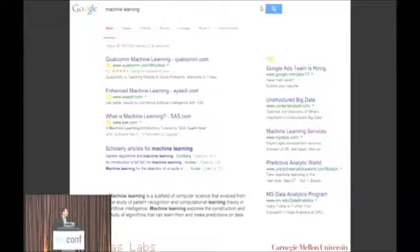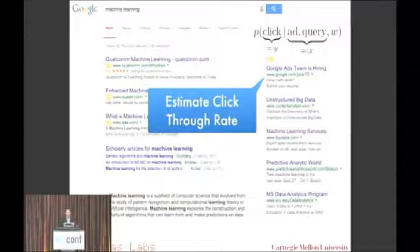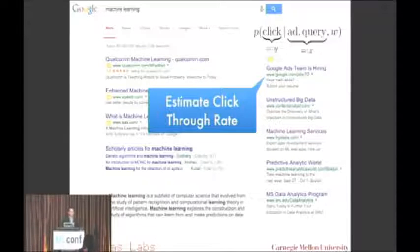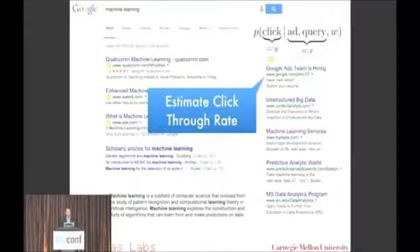Let's start with something really simple — logistic regression. If I do a Google search for machine learning, it looks like Google are actually trying to hire more people. This is essentially the problem they're trying to solve: they want to find out what are the chances that you're going to click on an ad given a query — say 'machine learning' — that the user is Alex, and maybe it's 9 a.m. in the morning. They want to estimate some parameter w to give you this.